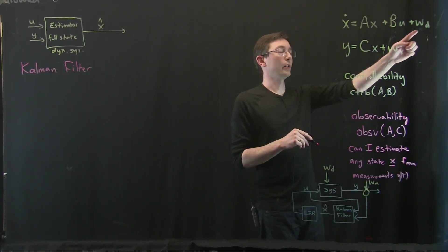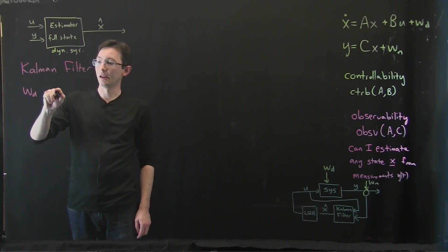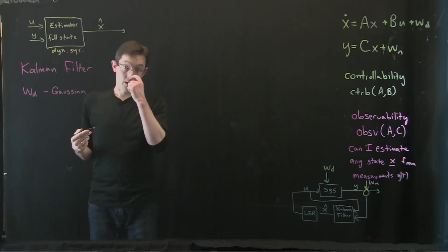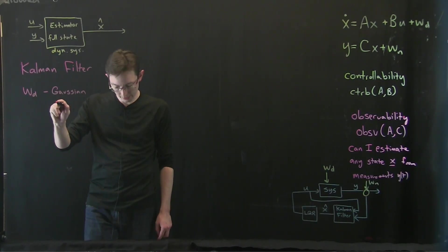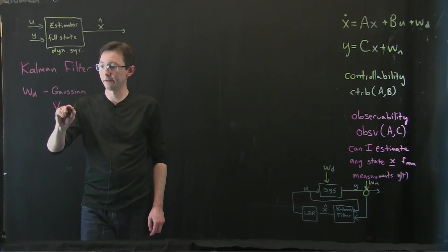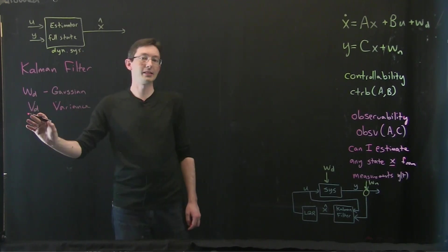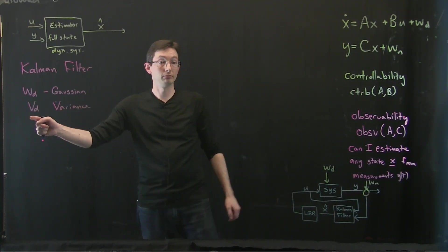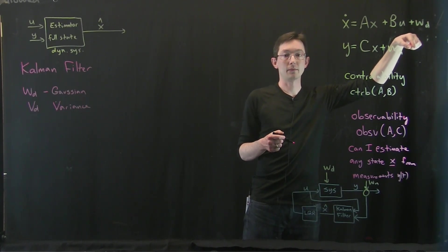In practice we're going to assume that WD is a Gaussian white noise process with a variance, let's call it VD. So this will be a covariance matrix of size n by n. However many states I have, this will be for disturbance, an n by n matrix.